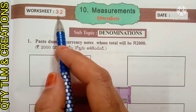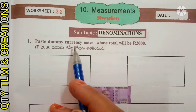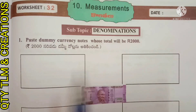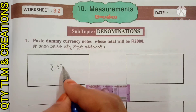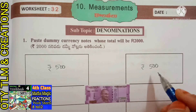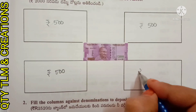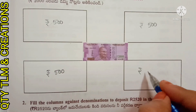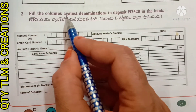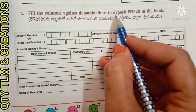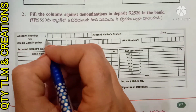Next, worksheet number 32, subtopic denominations. First question: paste dummy currency notes whose total will be 2000. Here we may paste 500 rupee notes — four 500 rupee notes. Next question: fill the columns against denominations to deposit 2520 rupees in the bank.